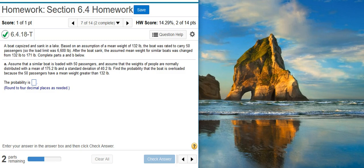Here's our problem statement. A boat capsized and sank in a lake. Based on an assumption of a mean weight of 132 pounds, the boat was rated to carry 50 passengers, so the load limit was 6,600 pounds. After the boat sank, the assumed mean weight for similar boats was changed from 132 pounds to 171 pounds. Complete parts A and B below.